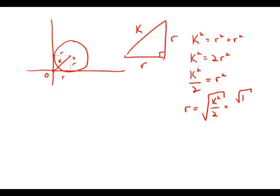We can separate the square root by division. And what we get is K over the square root of two. So the radius is K divided by the square root of two. And this is answer choice B.